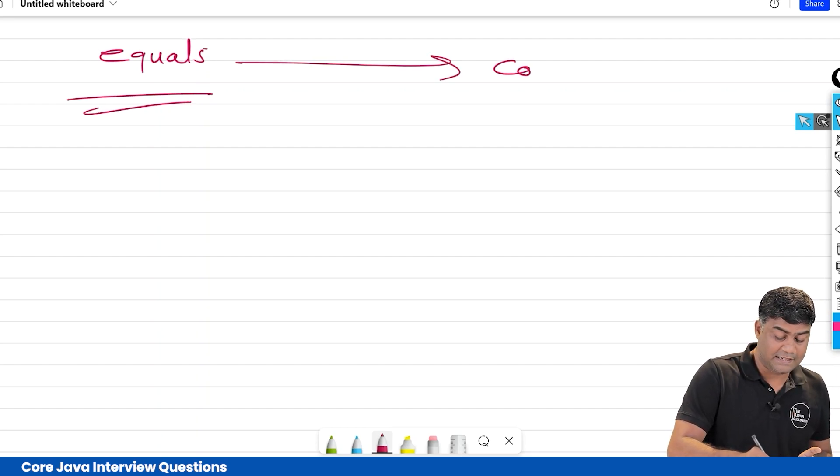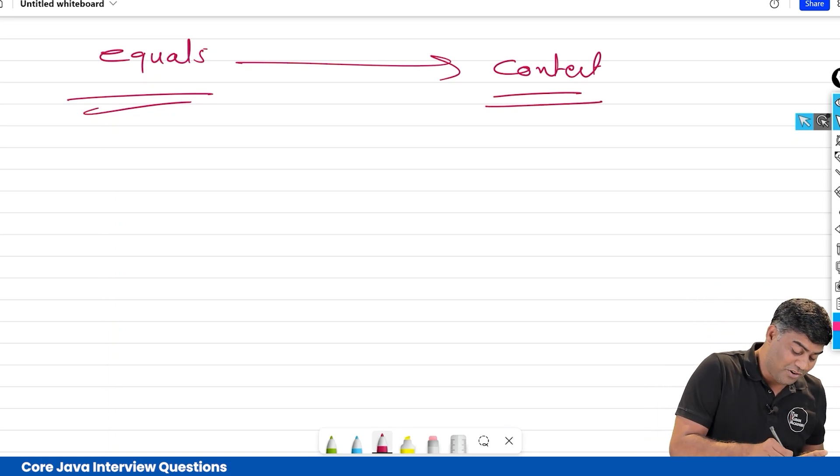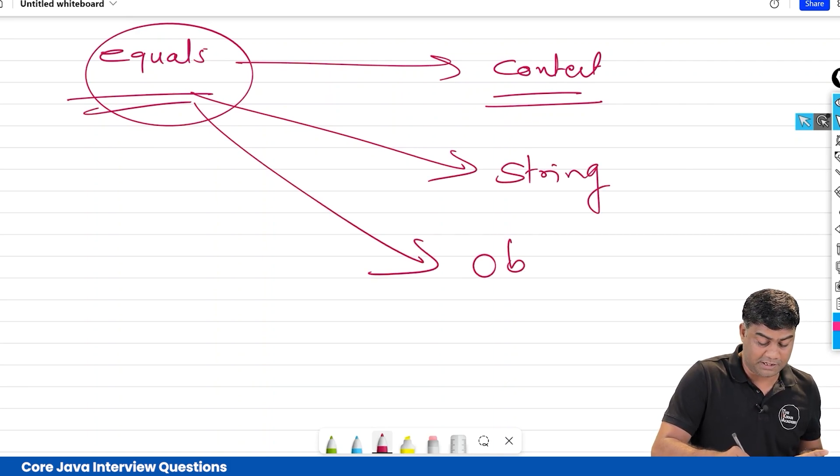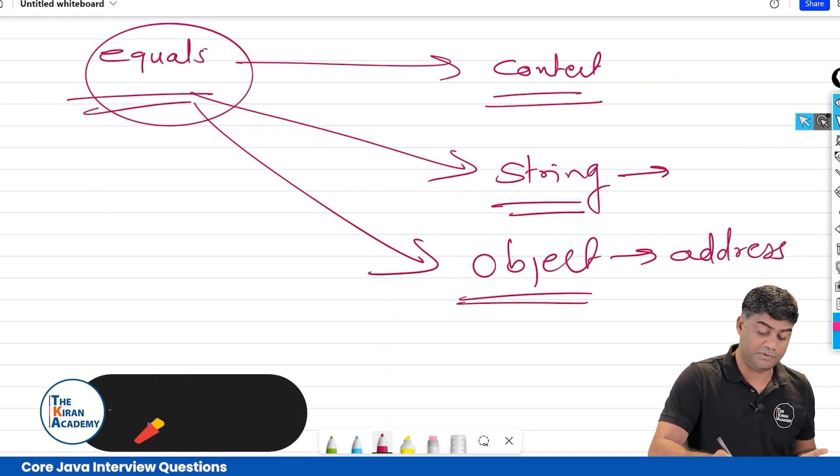But if he says no, that's not the case, then he is also true. Because you were talking about equals method of String class, and he was talking about equals method of Object class. This trick you should be knowing. Here content will get checked, but here again addressing gets checked. Don't get confused.